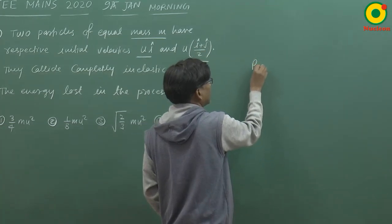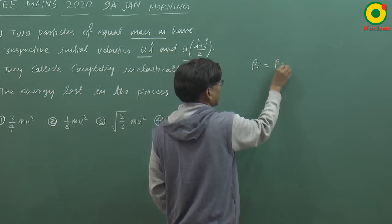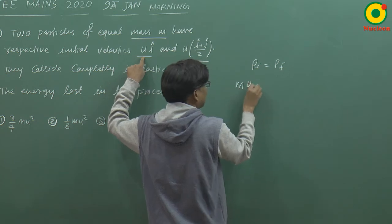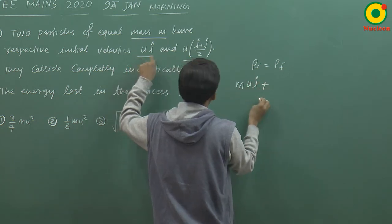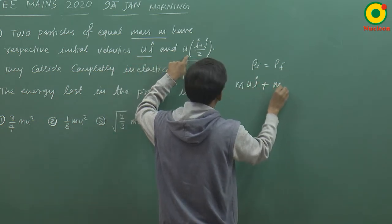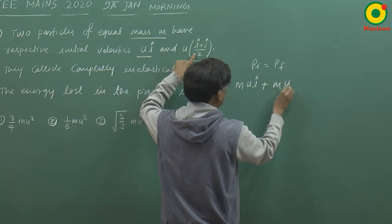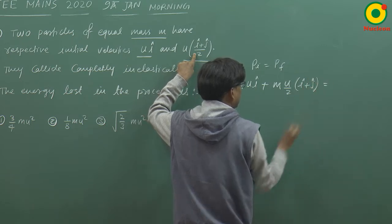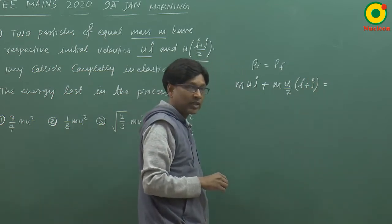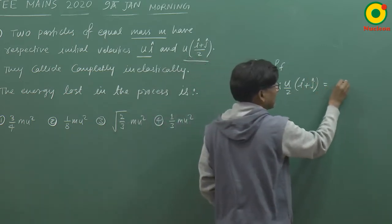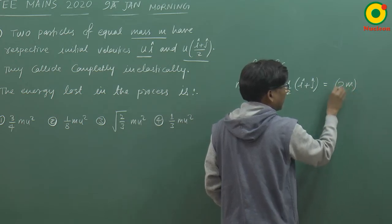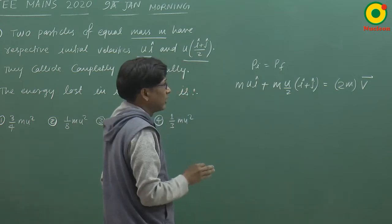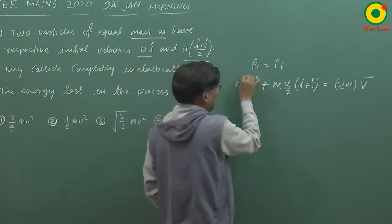We'll apply momentum conservation. Initial momentum will be: first particle has mass m and velocity u i cap. Second particle has mass m and velocity (u/2)i cap plus j cap. Since it's a completely inelastic collision, finally both will stick together, so mass becomes combined as 2m and velocity becomes v.